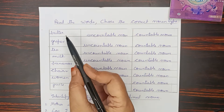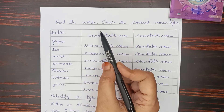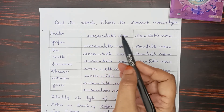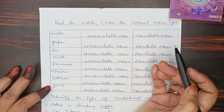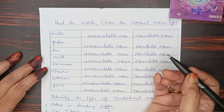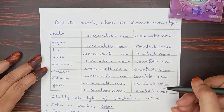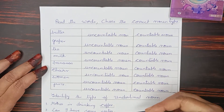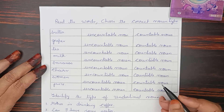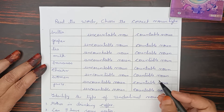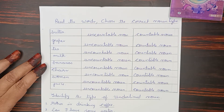Now, read the words and choose the correct noun type — whether that noun is uncountable or countable.